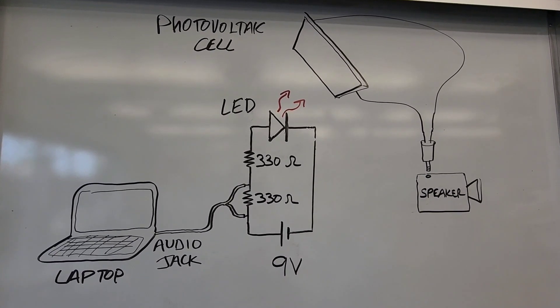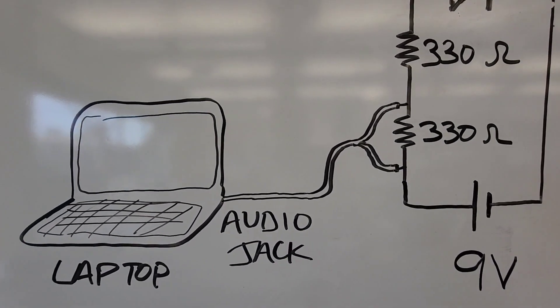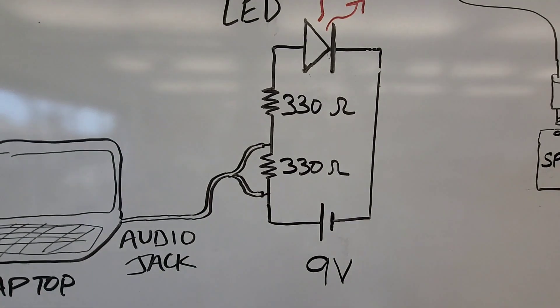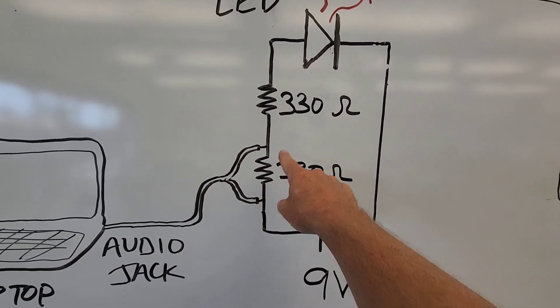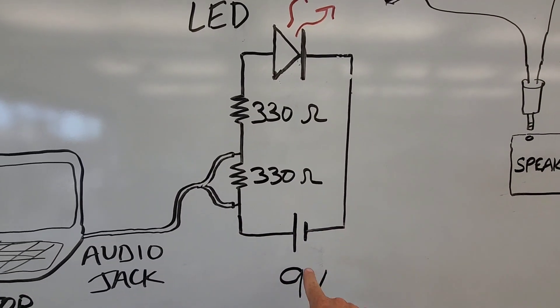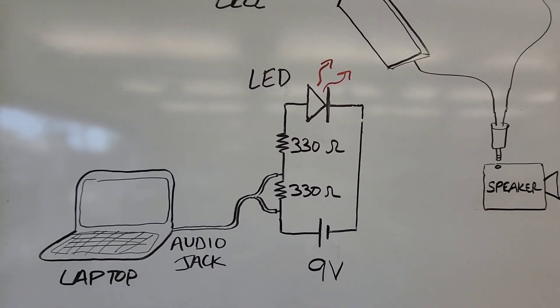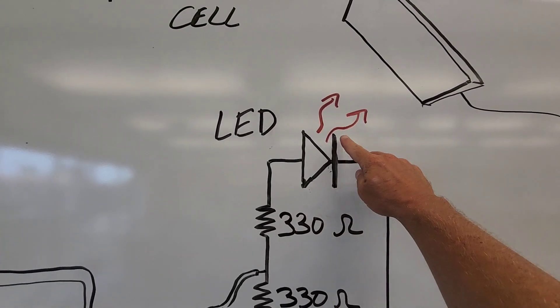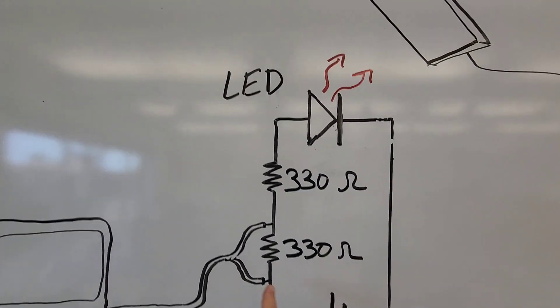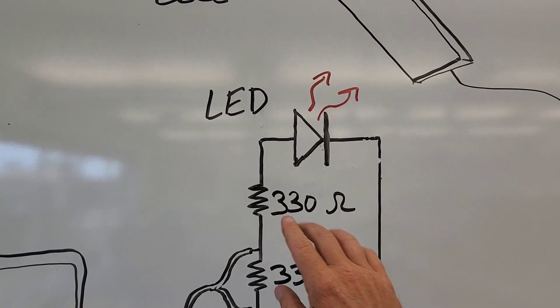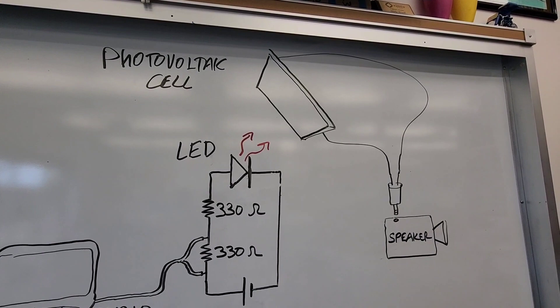So it was a fun little project. If you want to try to make your own, here's the setup that worked pretty well for me. Here is my laptop, I use the signal from the audio jack. I put it in parallel with this 330 ohm resistor. I had a 9 volt battery, two 330 ohm resistors in series with this LED, and then the light from the LED, whose brightness was fluctuating with the signal from the song, hitting the photovoltaic cell.